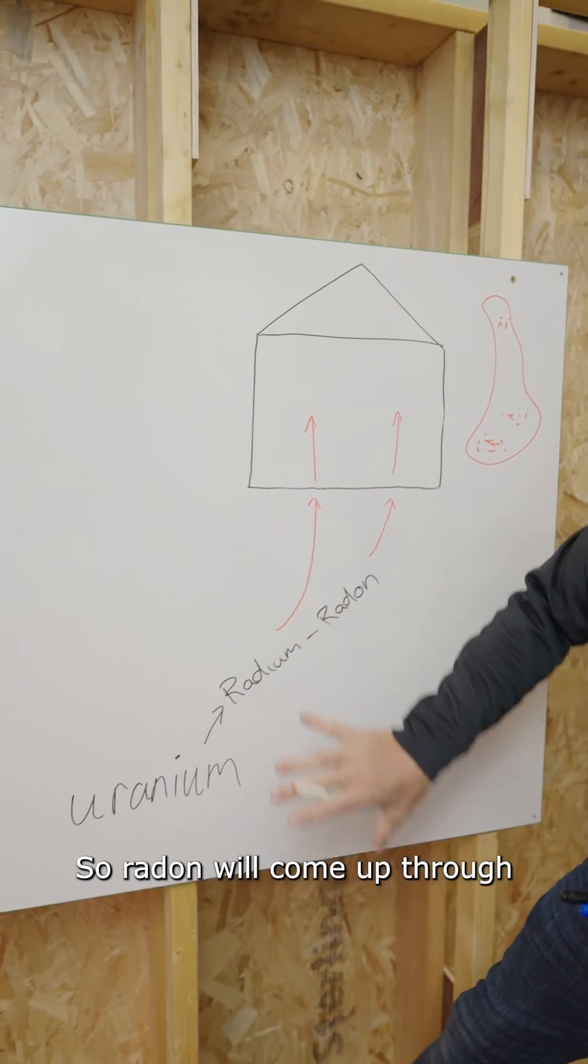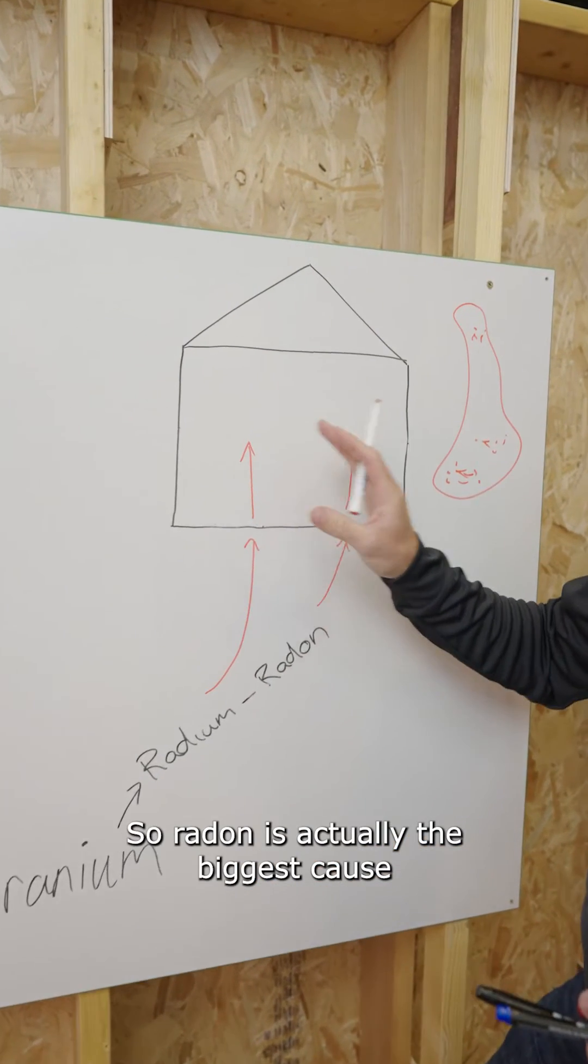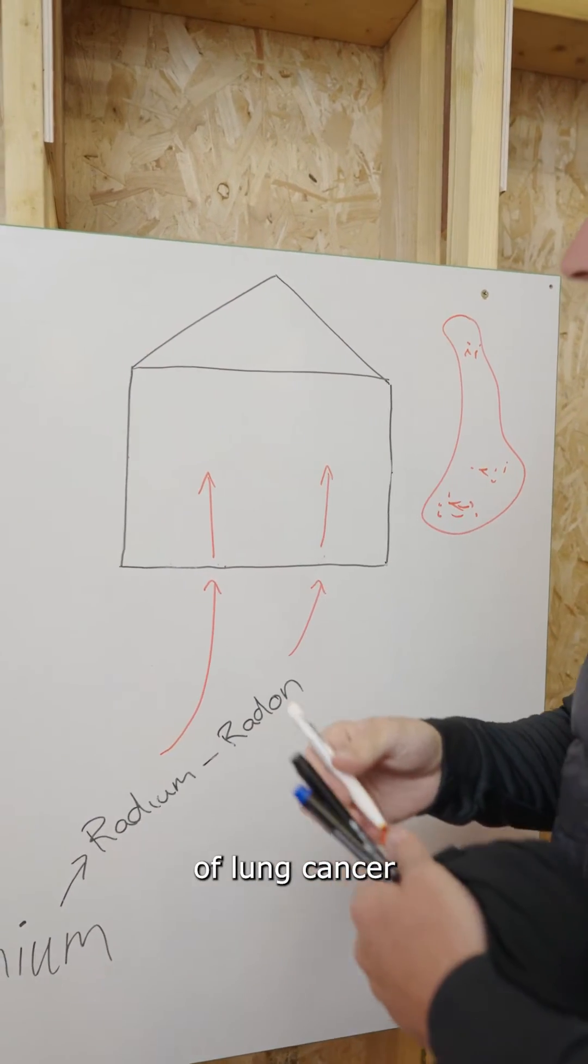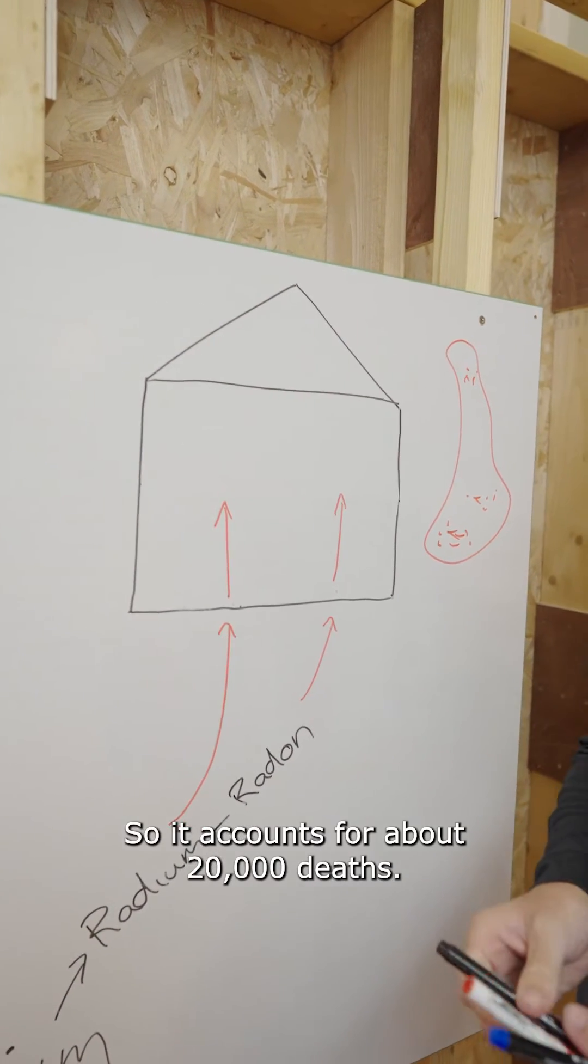So radon will come up through all the bedrock and then come into your building. Radon is actually the biggest cause of lung cancer in the world so it accounts for about 20,000 deaths.